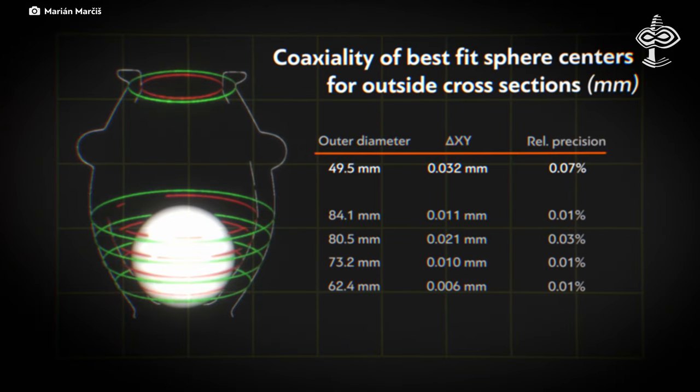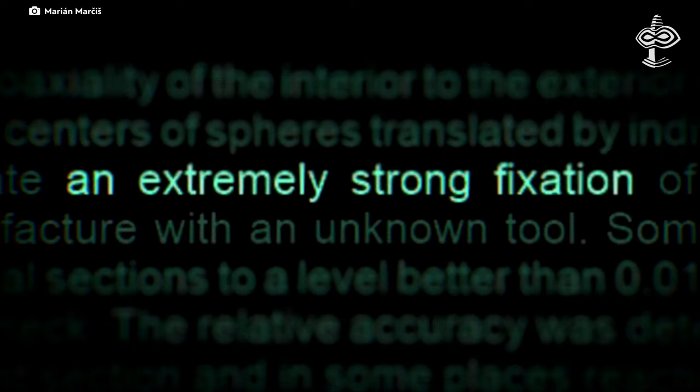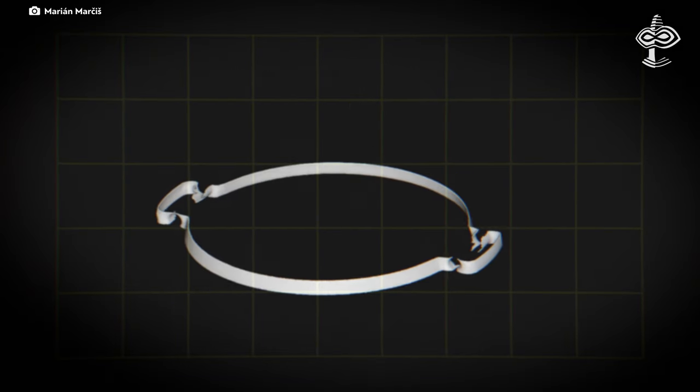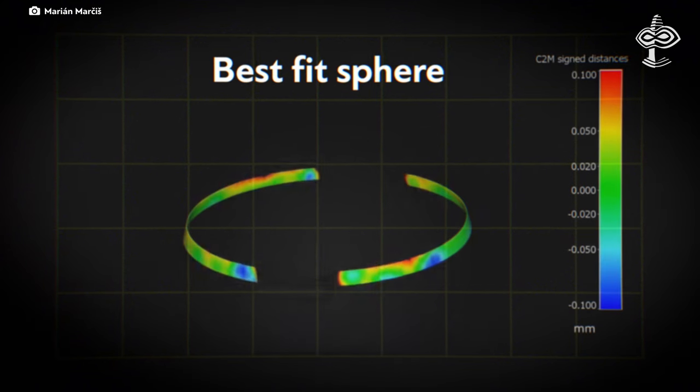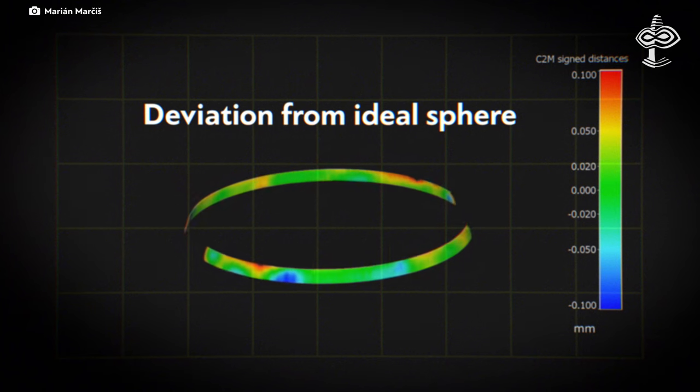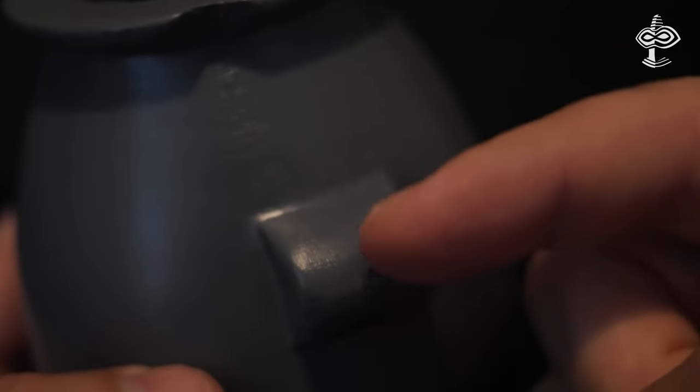Marian Marsis observed that the vase displays significant horizontal symmetry, suggesting it was rotated during production. However, the precision around the lug handles raises questions, as rotation alone seems insufficient due to their interference with tool movement. The challenge lies in how such precise curvature was maintained in these areas using basic tools, as even switching tools could introduce errors given the object's precision.